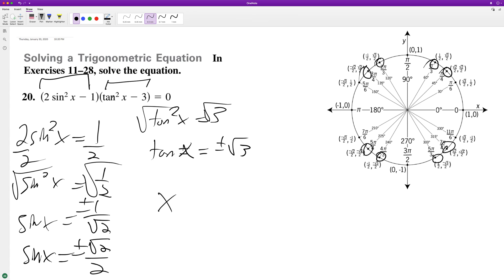So our x value is going to be equal to pi over 4 plus pi n, and 3 pi over 4 plus pi n. And that covers pi over 4, 5 pi over 4, and all its coterminals, and 3 pi over 4, 7 pi over 4, and all its coterminals.